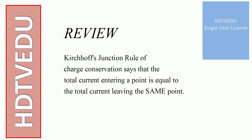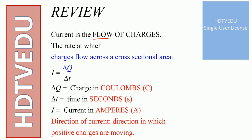Kirchhoff's Junction Rule of Charge Conservation says that the total current entering a point is equal to the total current leaving the same point. Current is the flow of charges, the rate at which charges flow across a cross-sectional area.